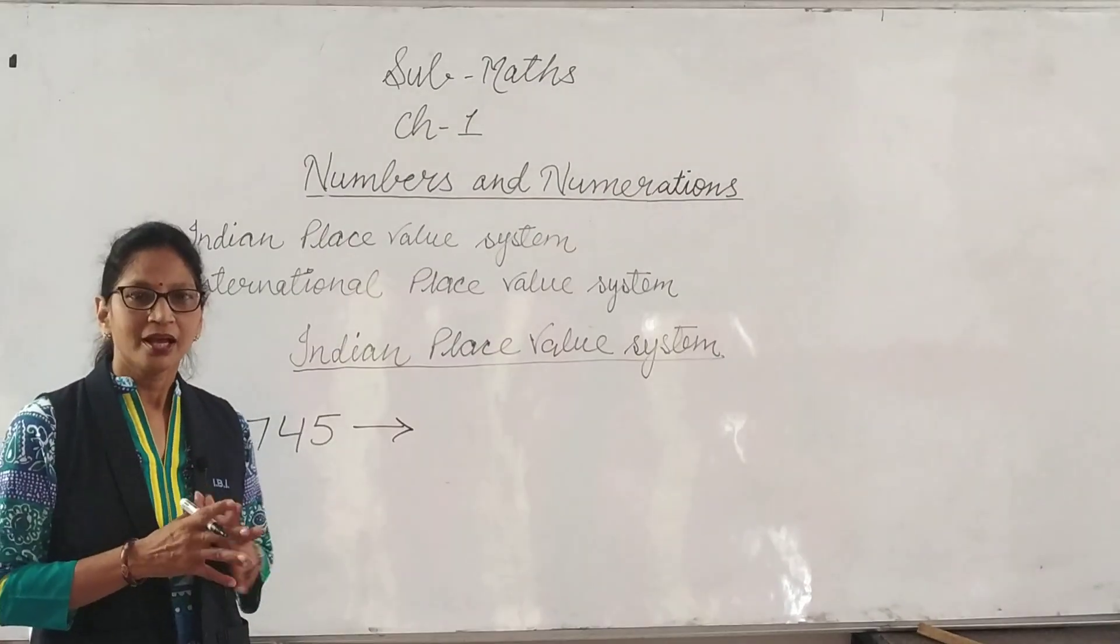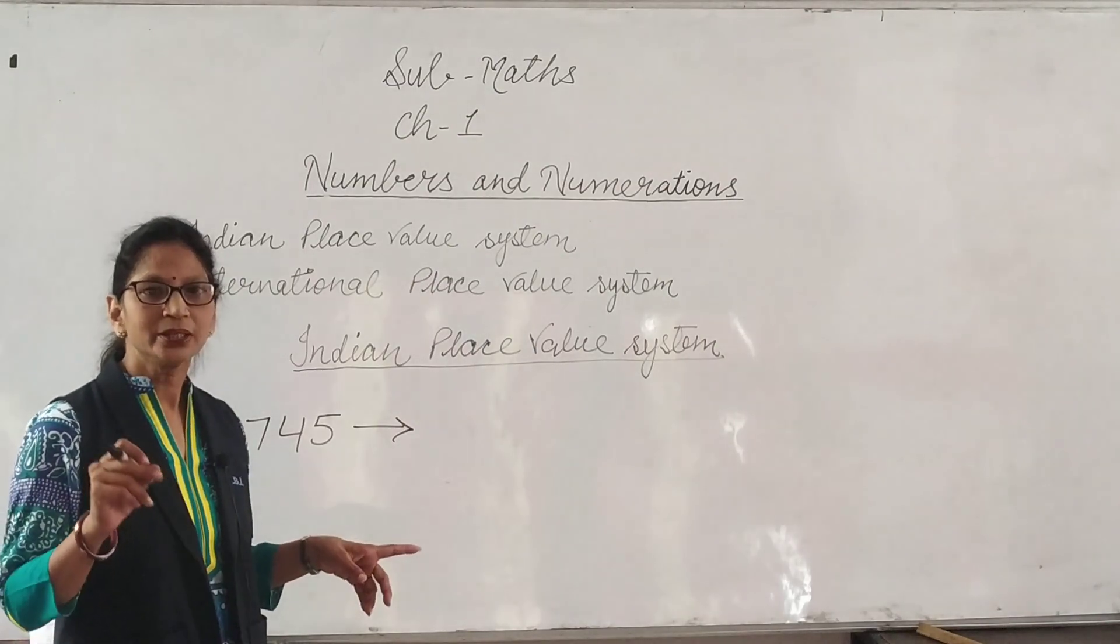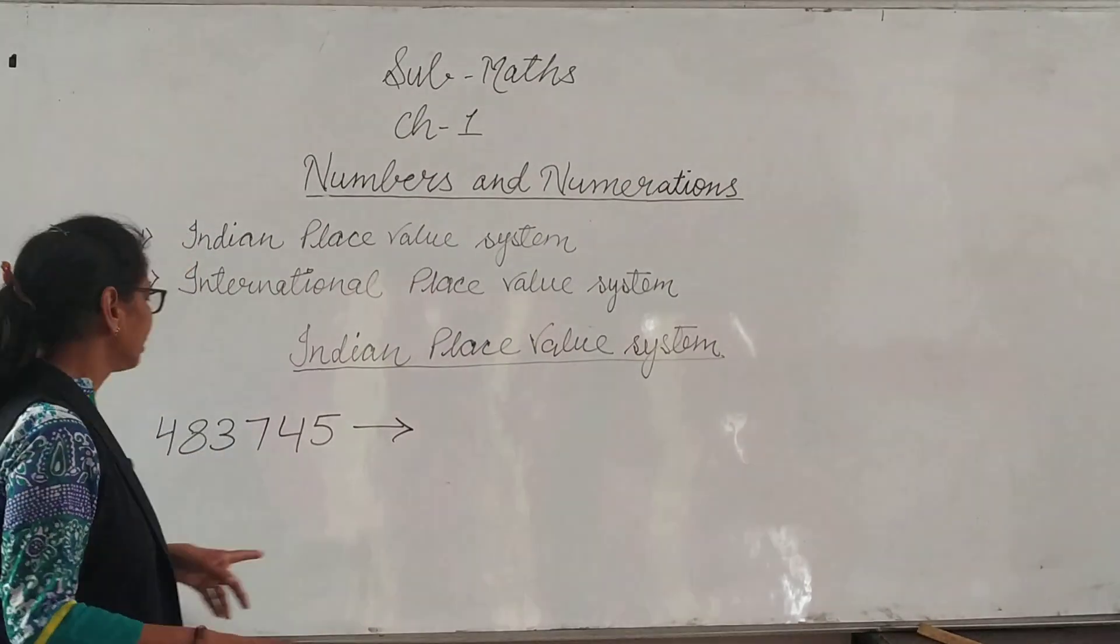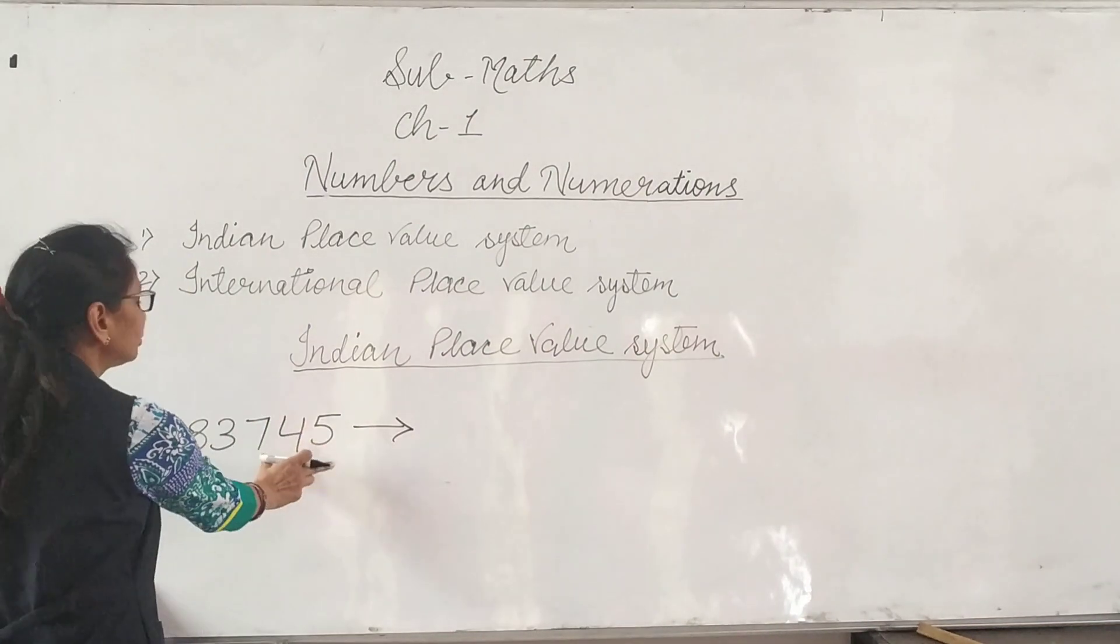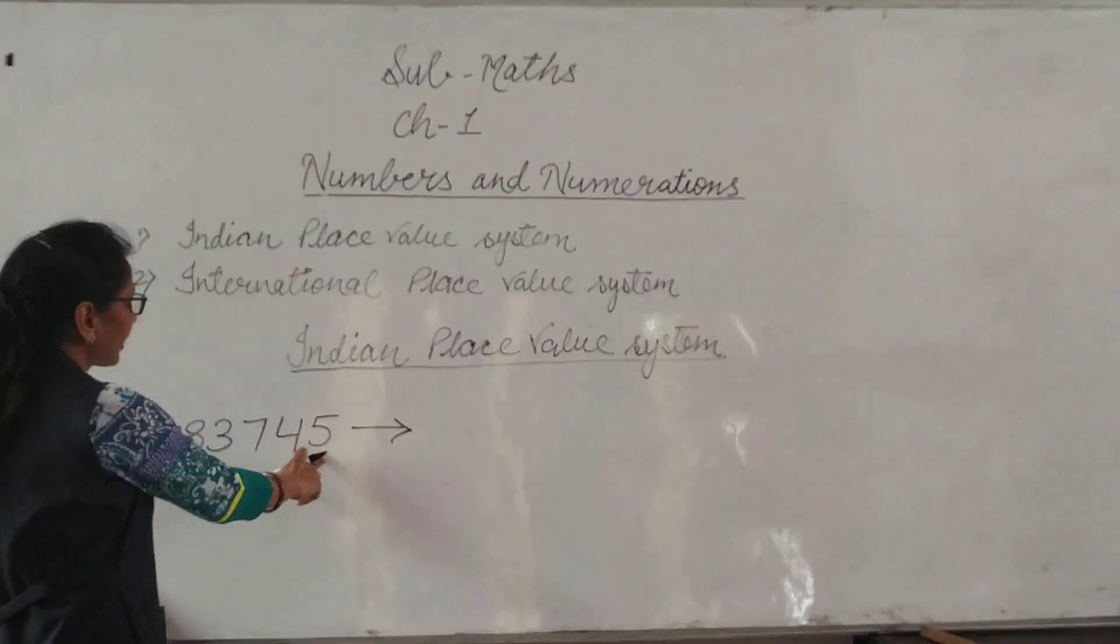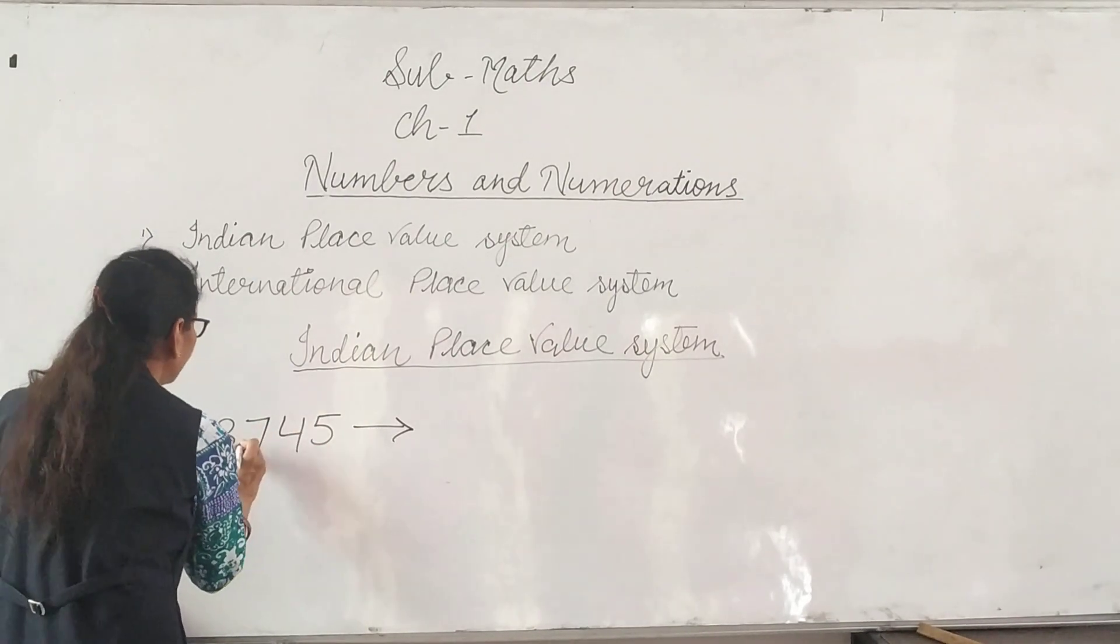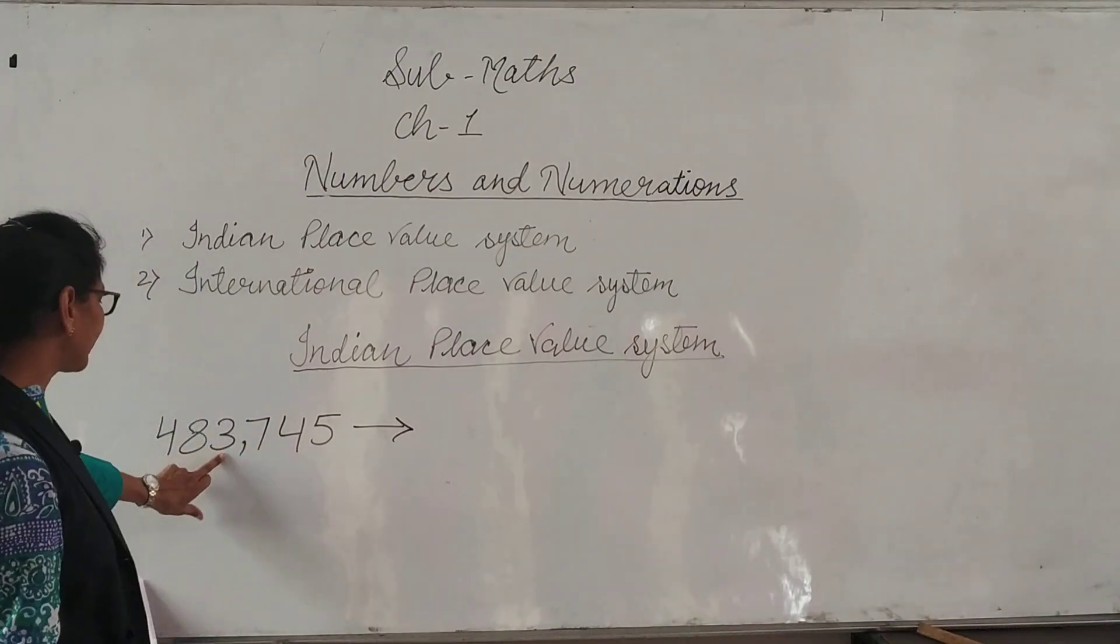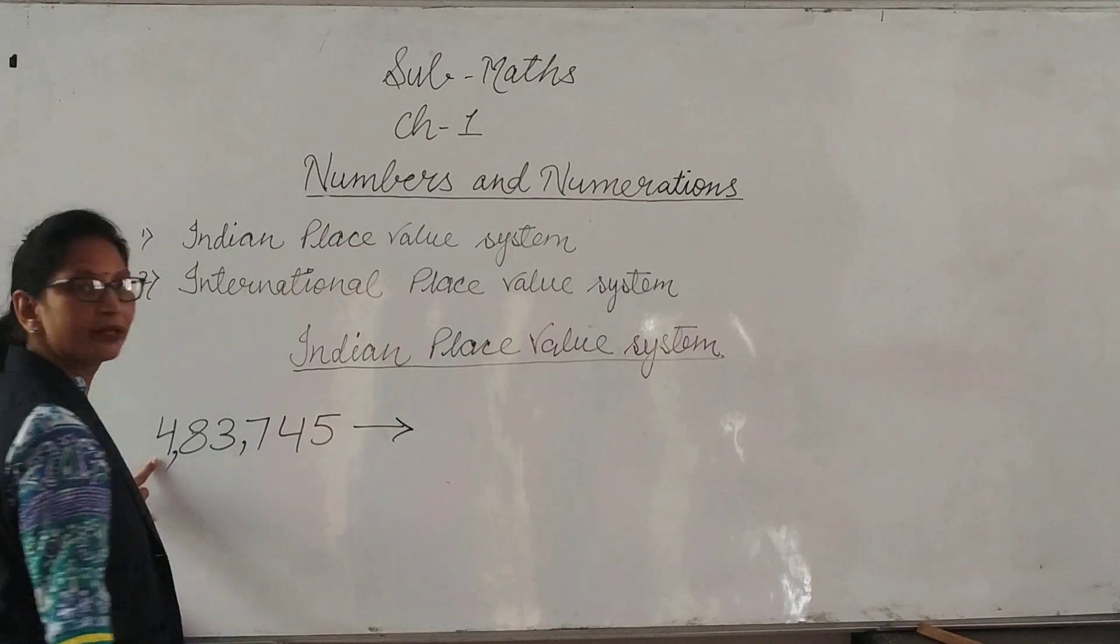We put commas after every period to read and write the number very easily. First, we put commas after every period. Ones, tens, hundred, we put comma here. Next, thousand, ten thousand, again we put comma here.